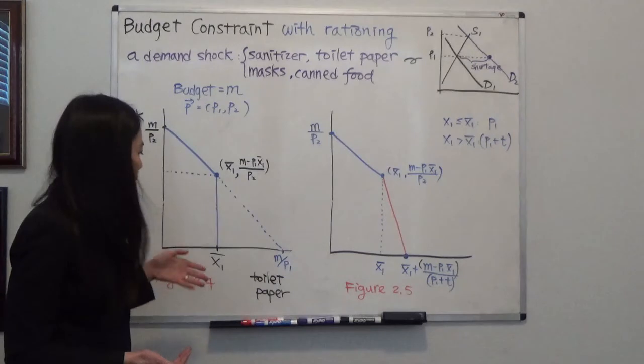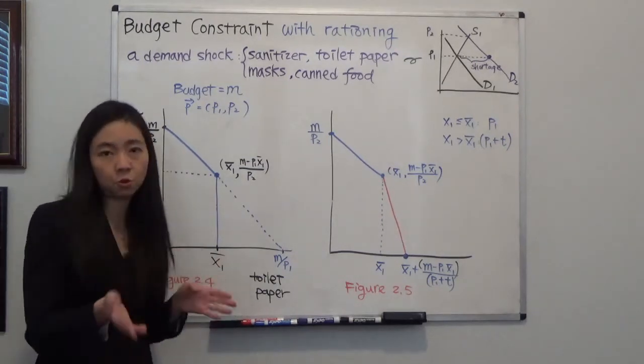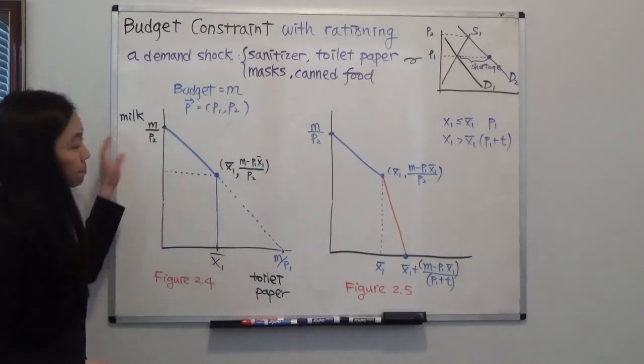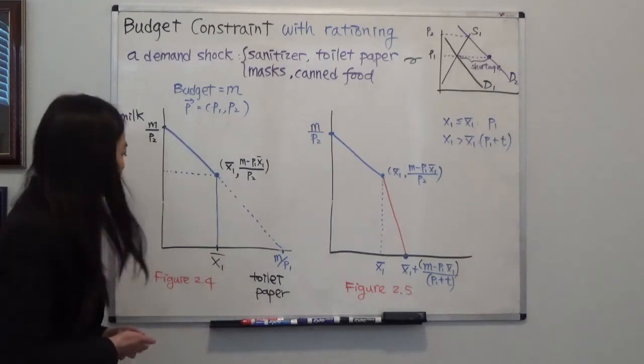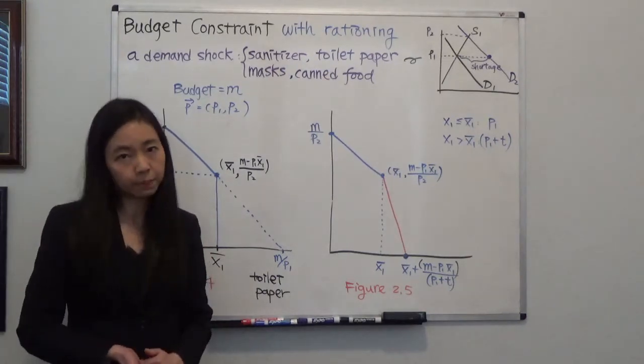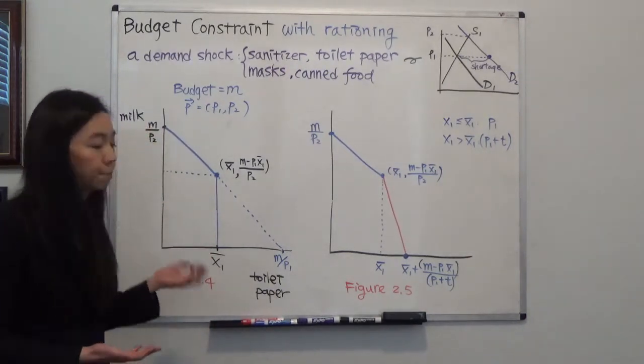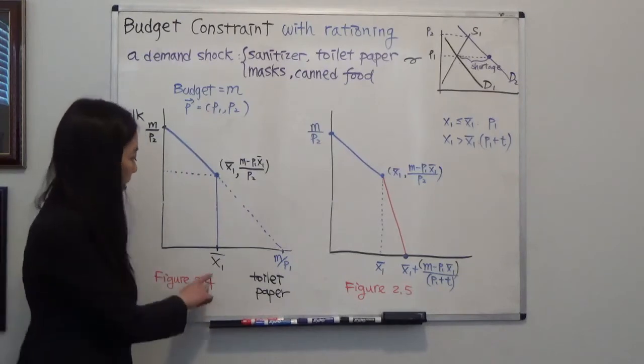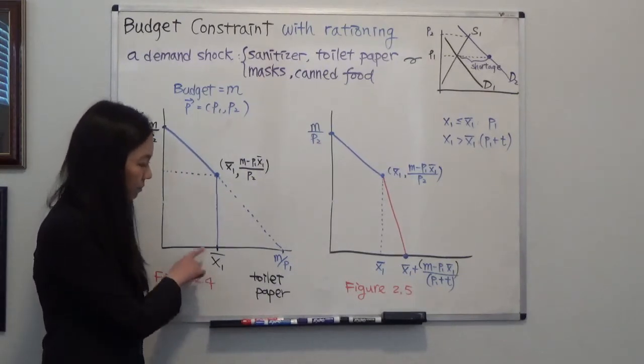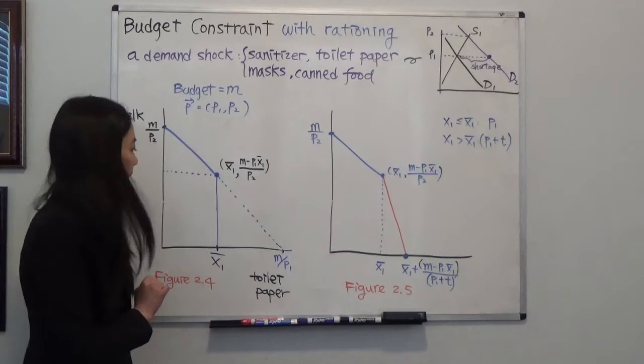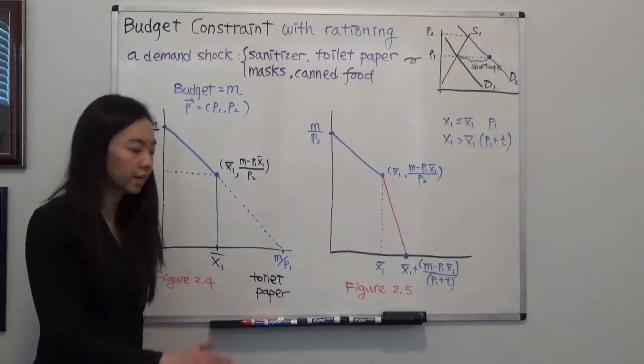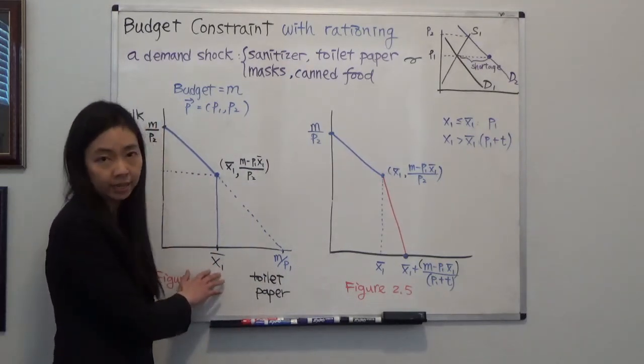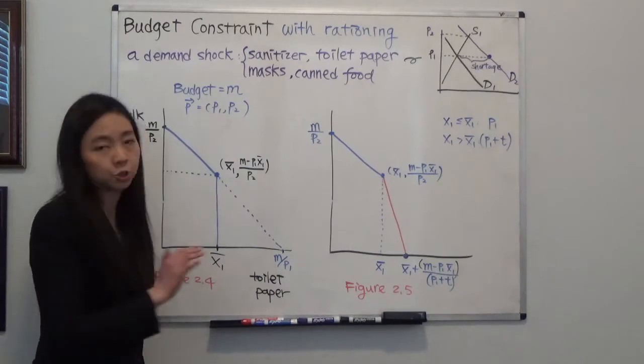The first is that, suppose you only consume two goods, toilet paper and milk. The shop is going to tell you that if you come to buy toilet paper, the maximum number of toilet paper you can buy is x bar rows of toilet paper. And I don't care how rich you are, you are just not allowed to buy more than x bar each time you shop in my shop.